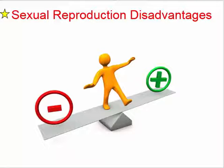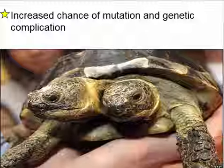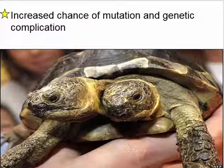Now let's talk about disadvantages of sexual reproduction. We talked about the main advantage — greater genetic diversity and better ability to survive in changing environments, including resistance to new diseases. However, there are some disadvantages. One disadvantage is that there is an increased chance of mutation and genetic complication. With sexual reproduction, you have a mixing of different genes, and there's a greater chance that something will get messed up a little bit.